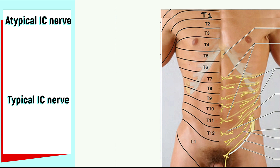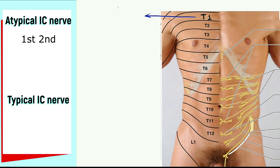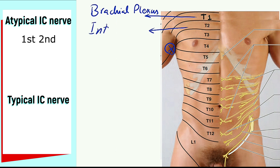The first and second intercostal nerves come from T1 and T2 spinal nerves. The T1 segment contributes to the formation of the brachial plexus to supply the upper limb. The lateral cutaneous branch of the second intercostal nerve supplies cutaneous innervation to the upper medial part of the arm — this branch is known as the intercostobrachial nerve. So the first two intercostal nerves are atypical intercostal nerves.